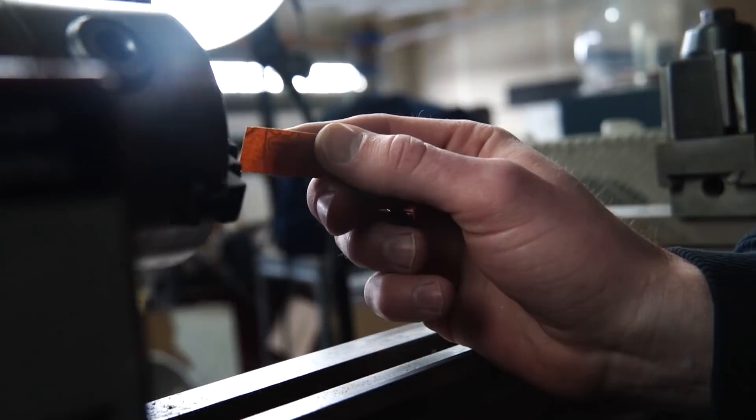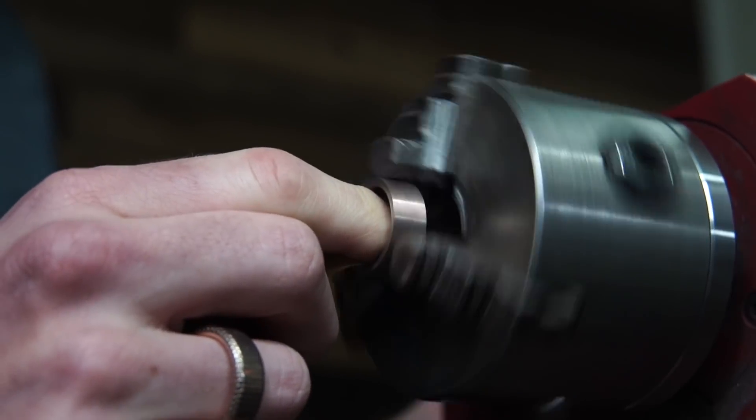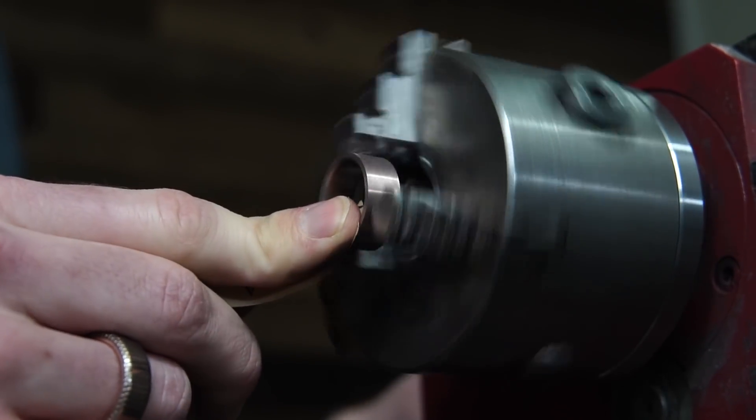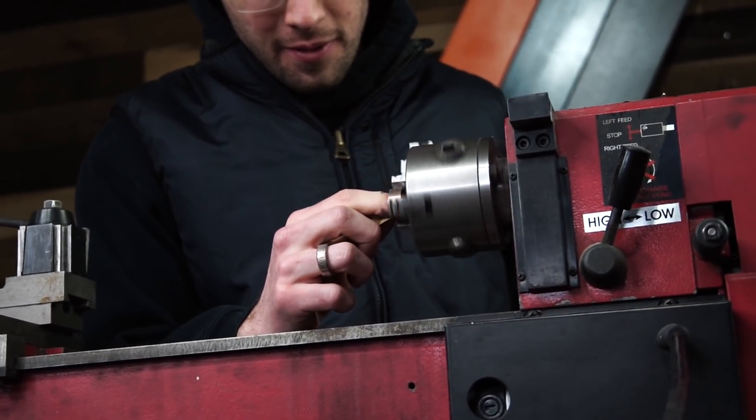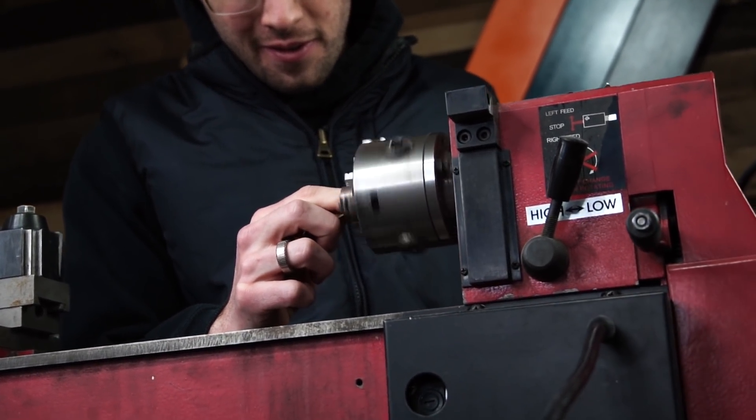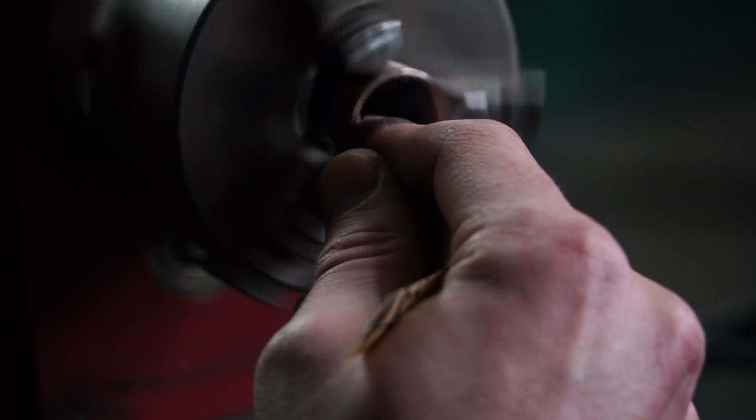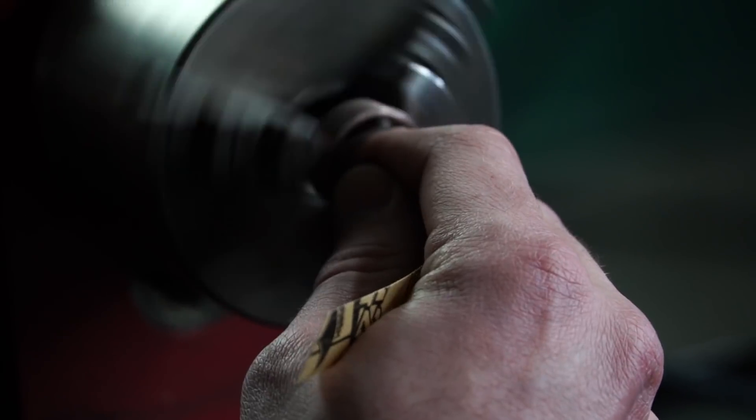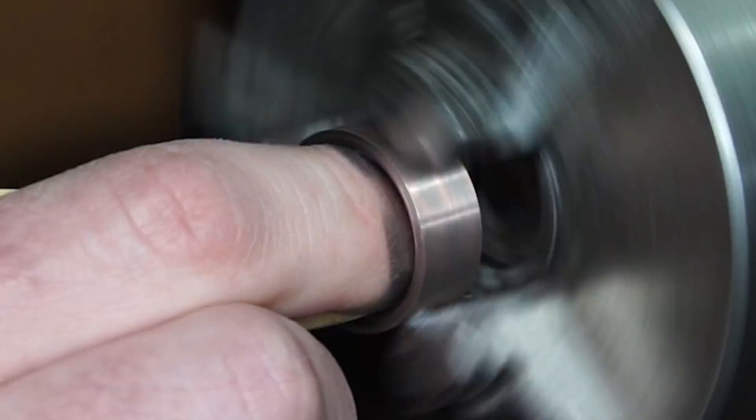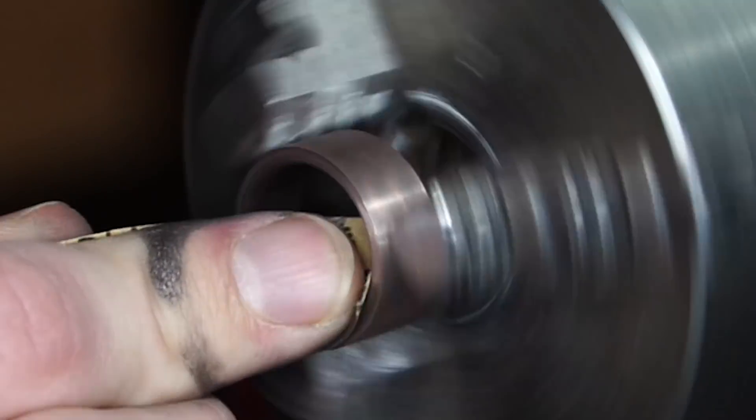Once I've done the bulk of the shaping with the dremel, I switch over to my sandpaper to just clean things up and get things super smooth. I start at a really low grit, I usually for superconductors start at about 150 grit, and then I work my way all the way up to about 2,000 grit.